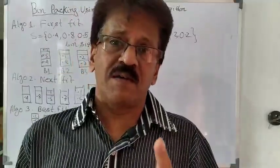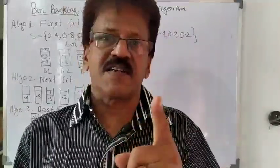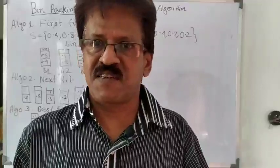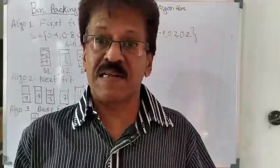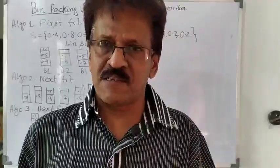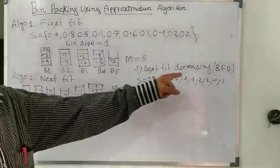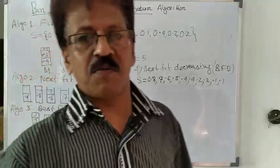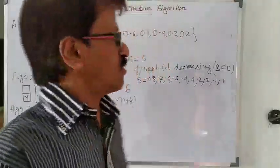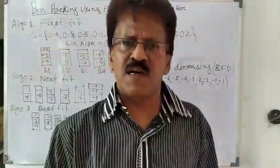An important and more optimal variant is Best Fit Decreasing (BFD). First, sort all elements in decreasing order of size, then apply the Best Fit algorithm. This gives a better, more optimal solution. The sorted sizes are 0.8, 0.7, 0.6, 0.5, 0.4, 0.2, 0.2, 0.1 and so on.